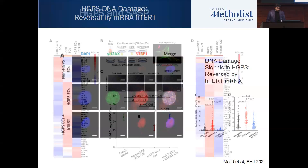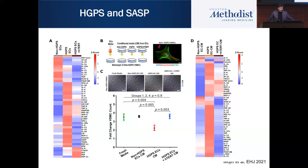I'm going to talk about inflammation and its role in aging. People who study aging cells are familiar with the concept of senescence-associated secretory phenotype, or SASP. Senescent cells are actually very active in terms of what they produce — they produce a lot of inflammatory cytokines and make the cells around them sick because of that cytokine production.